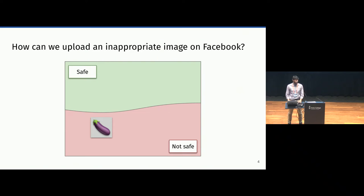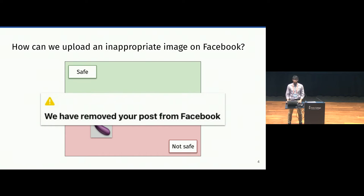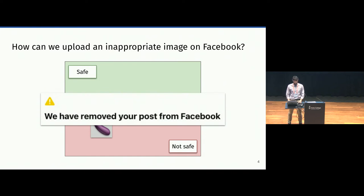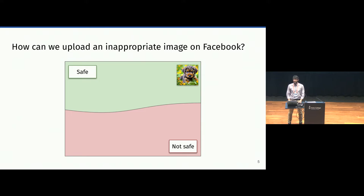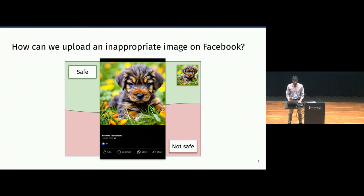So we want to upload this image. What's going to happen is that the filter being used by the platform is going to classify the image as not safe. If we take the example of Facebook, we're going to observe that the post has been removed — that's how we know the label assigned by the model is not safe. If instead we upload a safe image like a cute puppy, the puppy is going to upload successfully and we're going to get tons of likes.